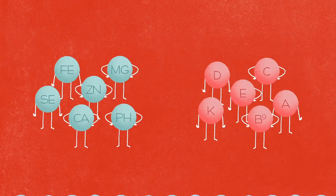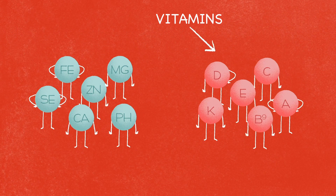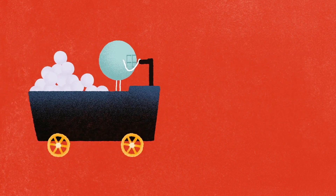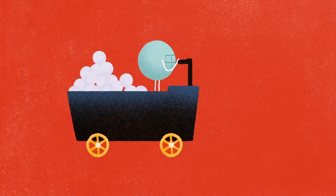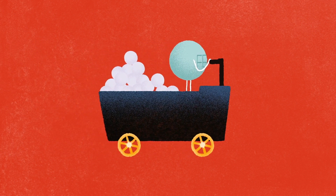Food is also composed of micronutrients, minerals and vitamins. Among the minerals, iron, for example, is involved in oxygen transport in the blood.